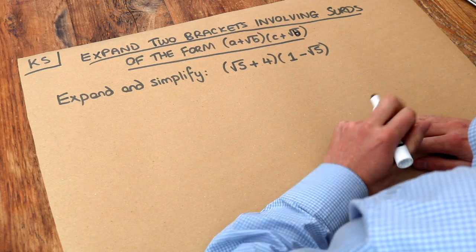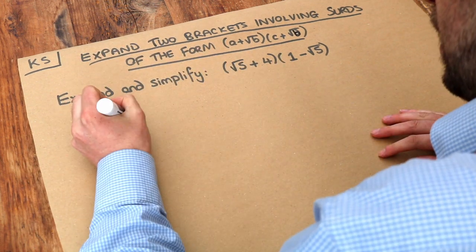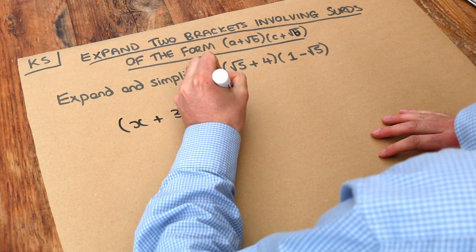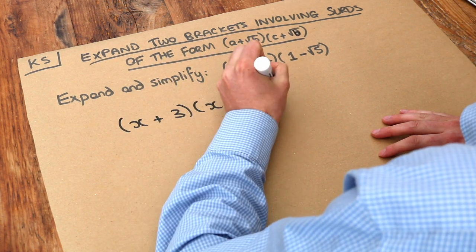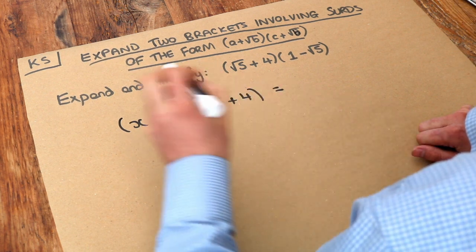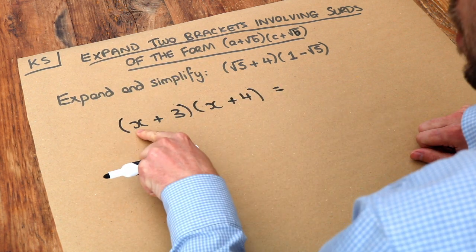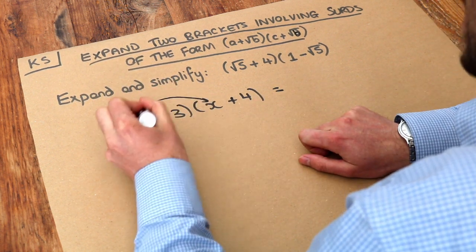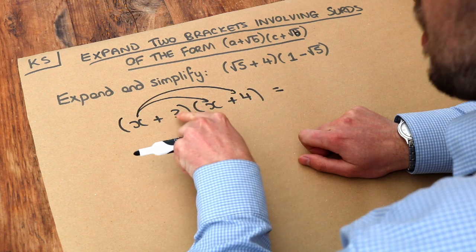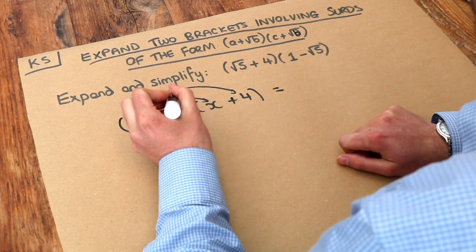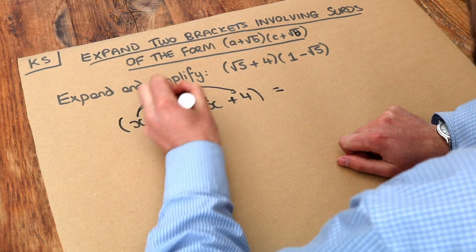Let's just quickly remind ourselves how we expand our two brackets. Let's say we had x plus 3 times x plus 4. Remember we do each thing in the first bracket multiplied by each thing in the second bracket. So we do the first thing in this bracket times by each of the things in the second, so the x times the x and the x times the 4. And then we do the second thing in the first bracket multiplied by each of the things in the second bracket. So we do the 3 times the x and we do the 3 times the 4.